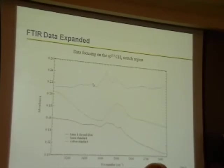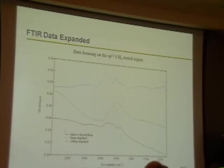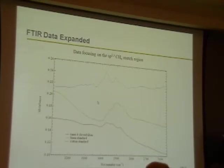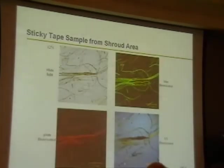Looking at the data focusing on sample SP23, the carbon-hydrogen stretch region: the Tamifor thread is somewhat comparable with cotton, but it doesn't have the linen characteristic that we would have liked to have seen.